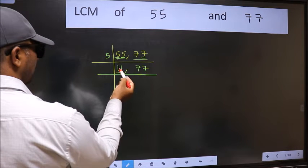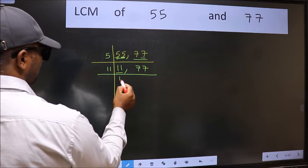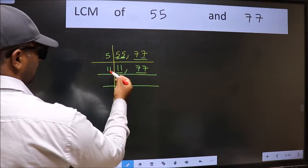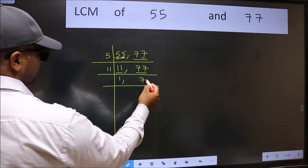Now here we have 11. 11 is a prime number, so 11 once 11. The other number 77, when do we get 77 in 11 table? 11 times 7 is 77.